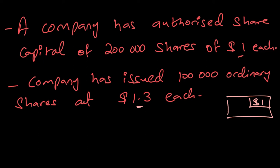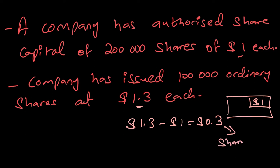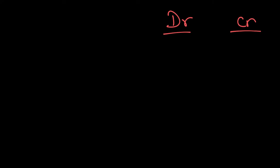The reason the share is being sold above its par value is that the company's shares must have demand, which is why the price has gone up. We have made a profit, which is also called the share premium. That's $1.30 minus $1.00 = $0.30 profit per share, which goes to our reserve called share premium.